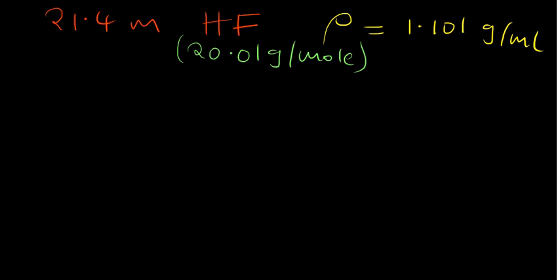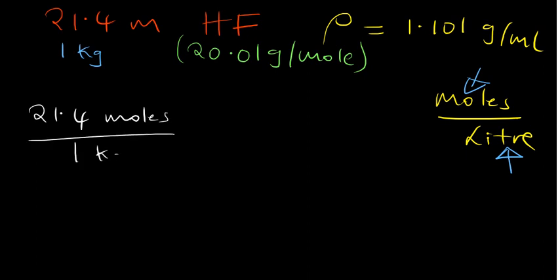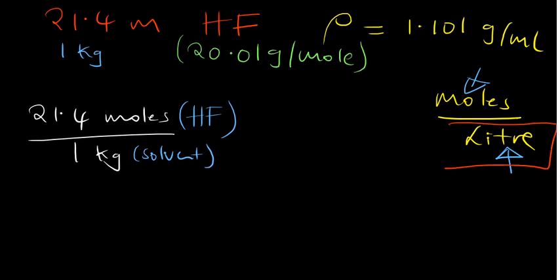We are converting to molar concentration, which is moles per liter. We need the number of moles and the volume in liters. Since the mass of the solvent was not given, we take the assumption that it is 1 kilogram. So we have 21.4 moles of the solute — hydrogen fluoride — divided by 1 kilogram of solvent. We already have the number of moles; now we need the volume in liters of the solution, which we'll find using the density.